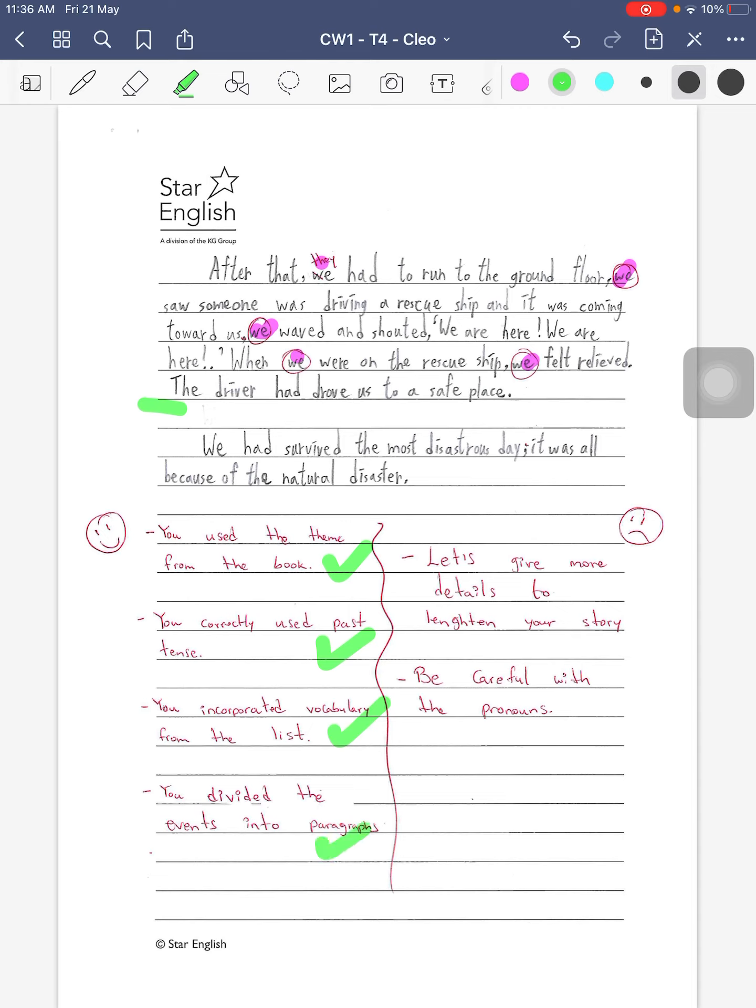Some things that you have to be careful of for next time: try to give more details. If you use more adjectives or more description, then you will have a longer story. And again, be careful with the pronouns. We always have to stick if you're talking about people, so you need to use they, they're, them. Let's keep on reminding these for next time so we can improve it. Good job!